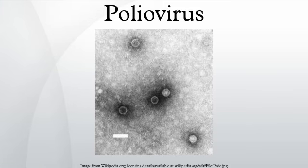Poliovirus, the causative agent of poliomyelitis, is a human enterovirus and member of the family Picornaviridae. Poliovirus is composed of an RNA genome and a protein capsid. The genome is a single-stranded positive-sense RNA genome that is about 7,500 nucleotides long. The viral particle is about 30 nanometers in diameter with icosahedral symmetry. Because of its short genome and its simple composition — a non-enveloped icosahedral protein coat — poliovirus is widely regarded as the simplest significant virus.